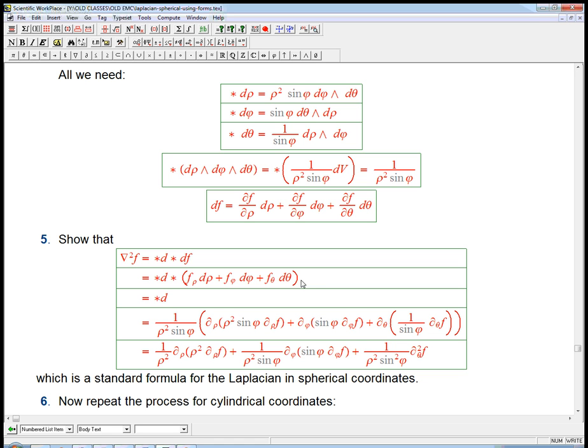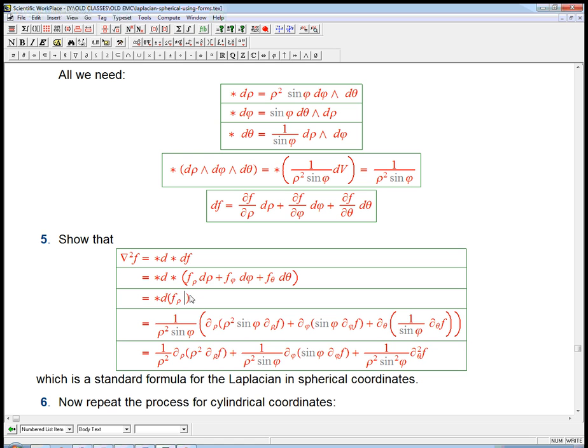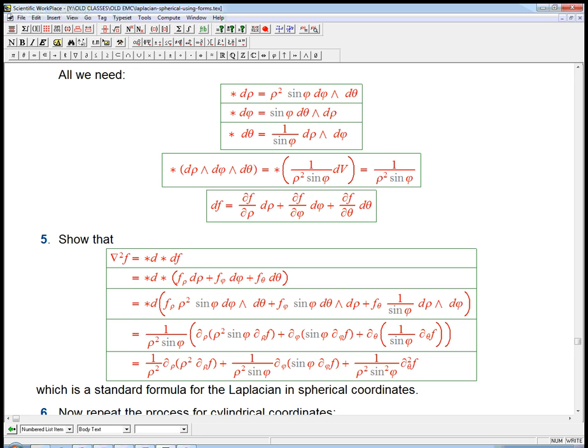Now we do the star. Star, so F rho, it's linear of course. It's not a calculus operation, it's just an algebra operation. So the F rho comes out, and we know star D rho is just this guy. Plus F phi, that's the partial derivative aspect of phi, times star D phi. And then plus F theta, and then D theta is just this guy.